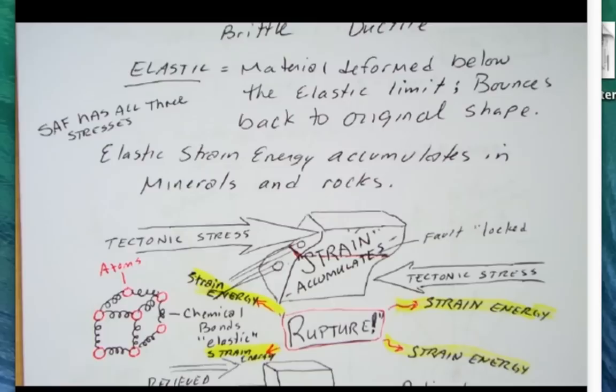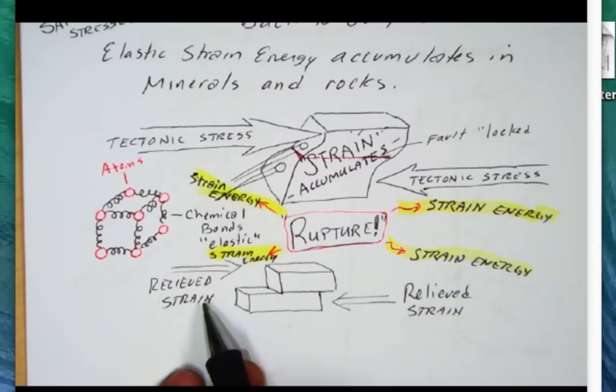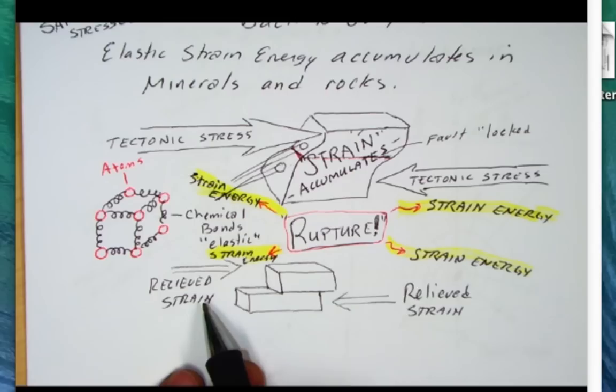It can't hold on anymore and it'll slip. The slip on the fault will result in release of that strain energy. The strain energy is being released after this rupture and as a result, the rock is back to its square shape